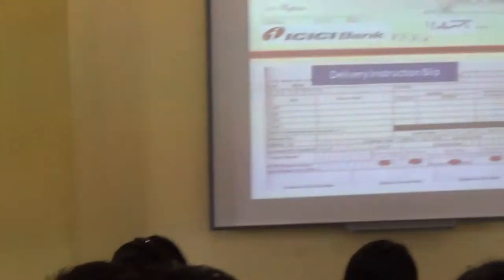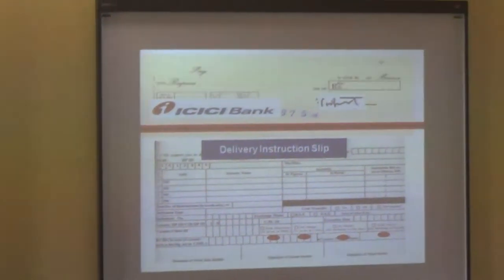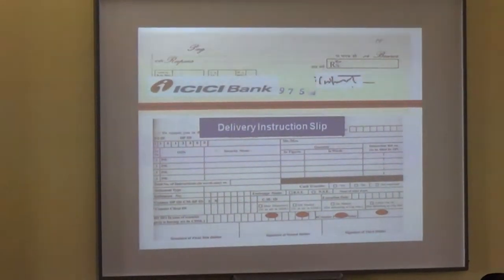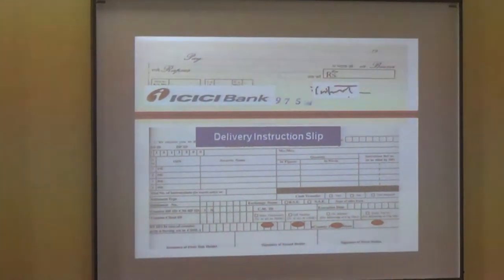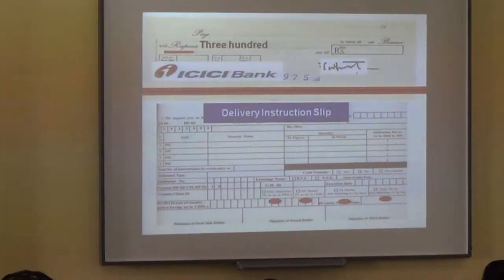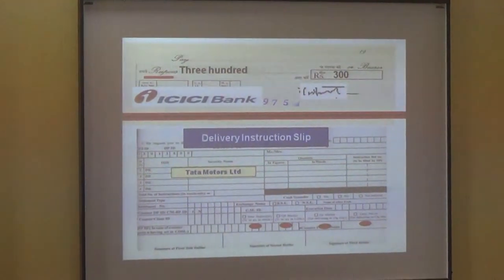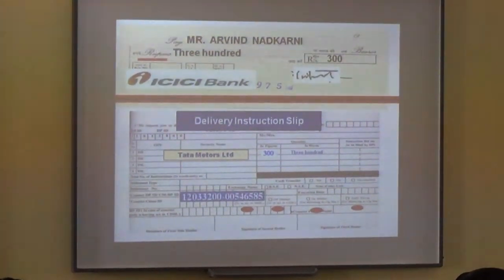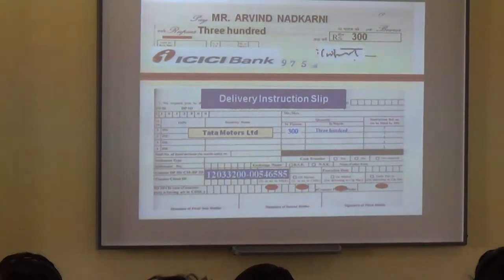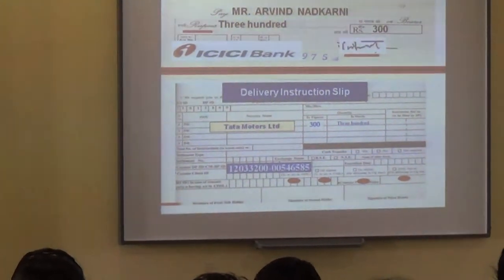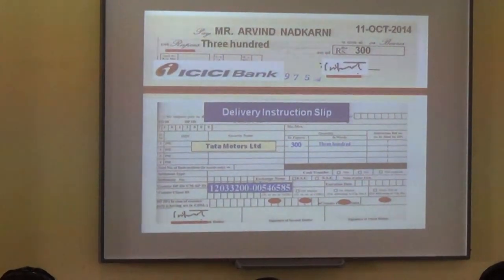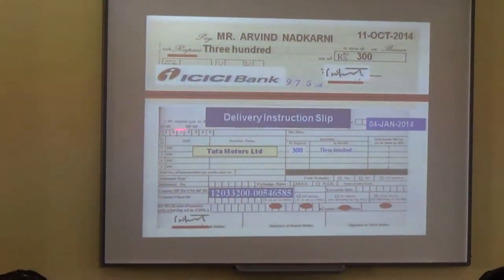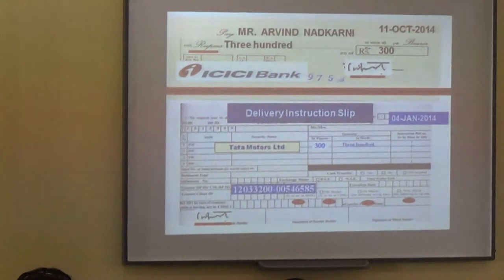I am comparing a cheque with a Delivery Instruction Slip. A cheque looks simple; an instruction slip looks complicated. But it is not complicated. All the fields available on a cheque are the same fields available on a Delivery Instruction Slip. On a cheque we write rupees in words and figures; here we write shares in words and figures. On a cheque we write the name of the person to whom we give money; here we write the demat account number of the person to whom we give shares — the demat account number is 16 digits. On a cheque I put my signature; here also I put my signature. On a cheque I write a date; here also I write a date. When you submit the instruction slip, your demat account is debited and his demat account is credited — time taken is only one second.